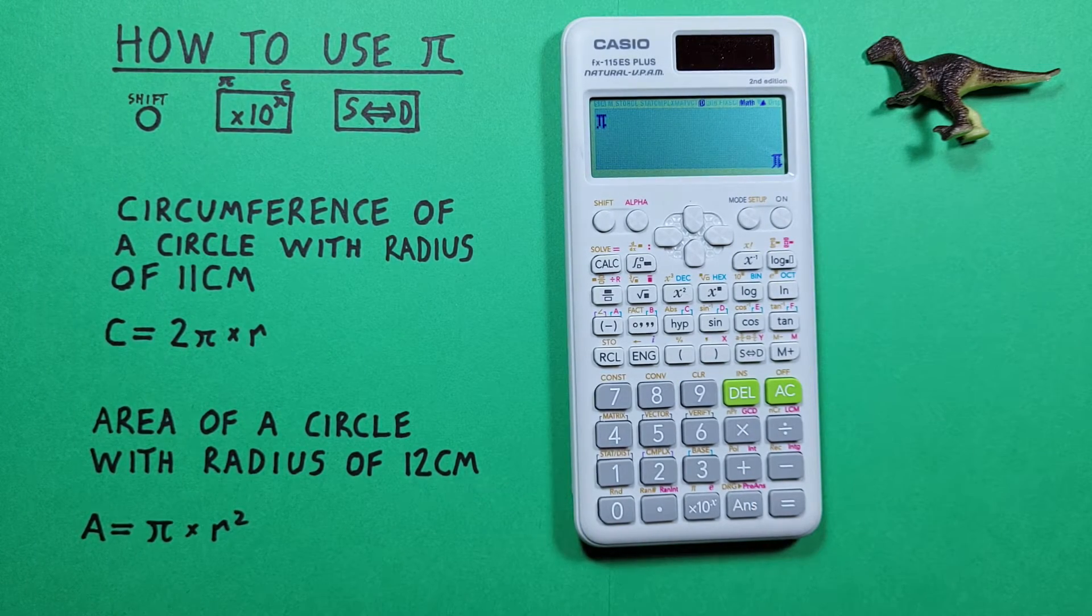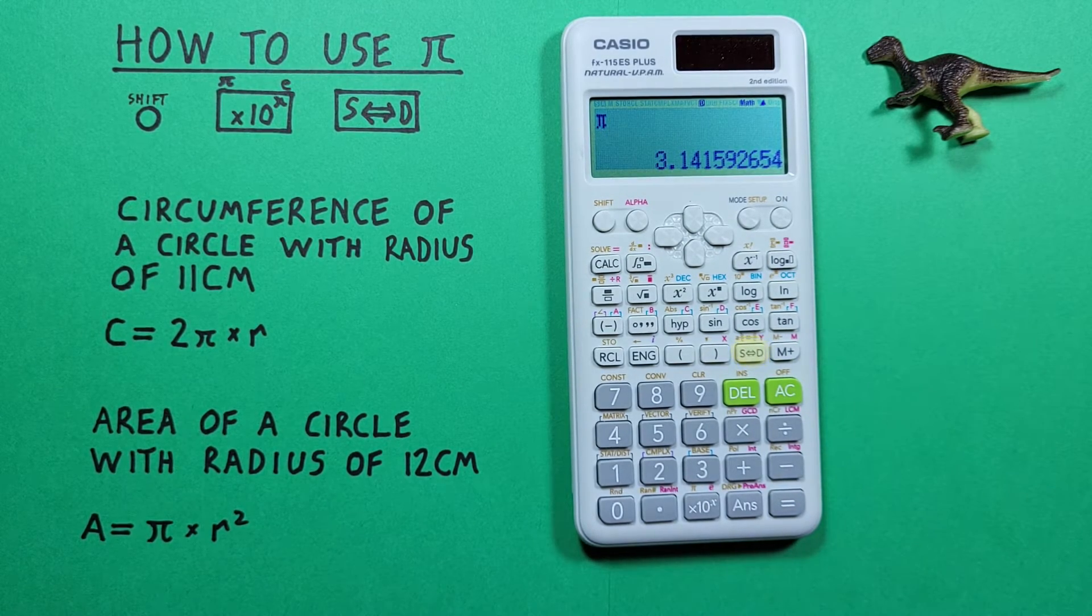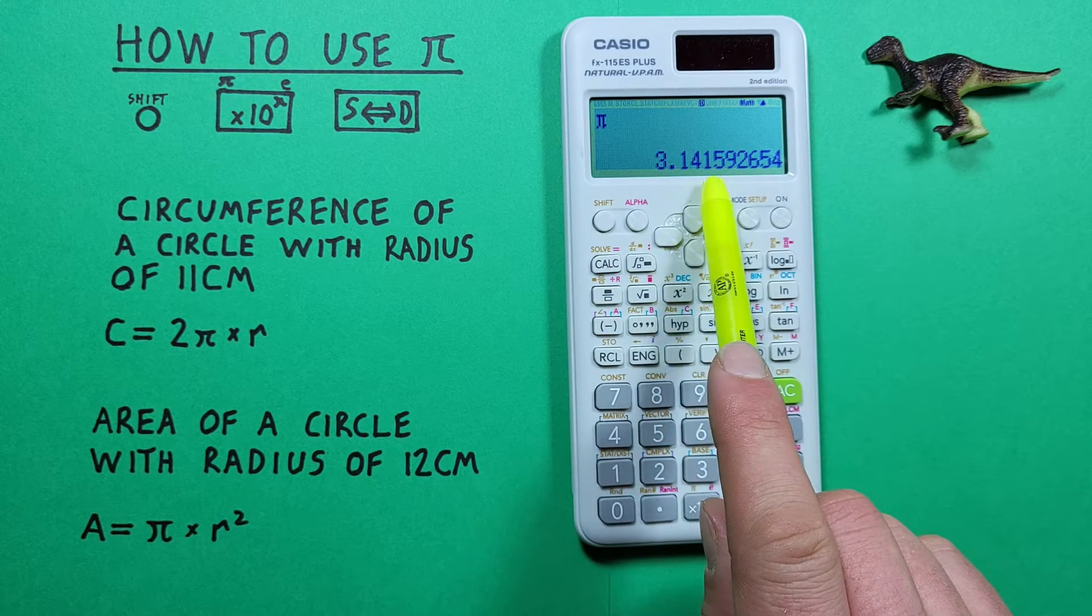If we want to get that as a decimal we can press the s to d key and we get a result of 3.14159 etc.